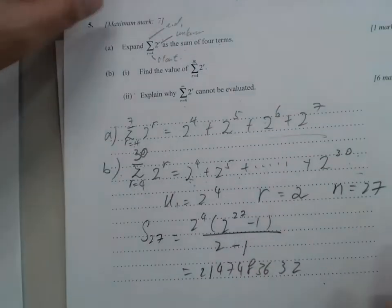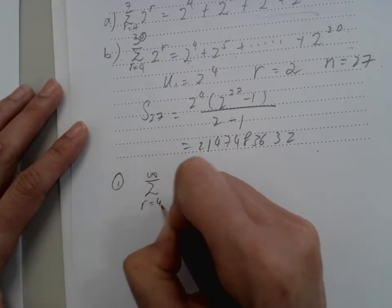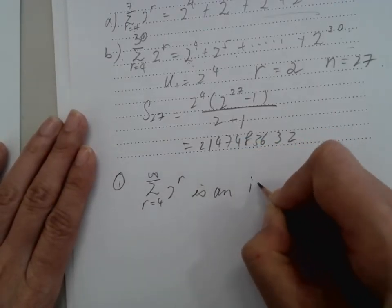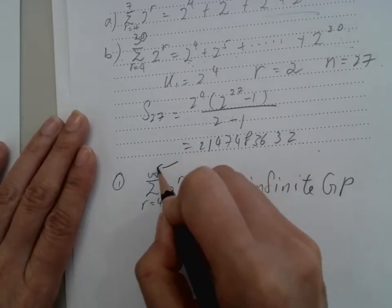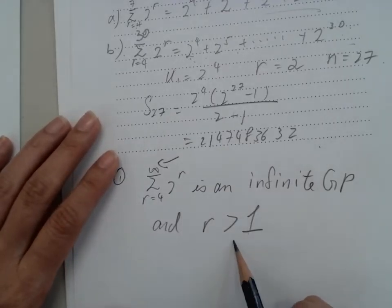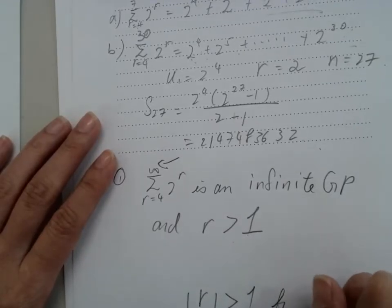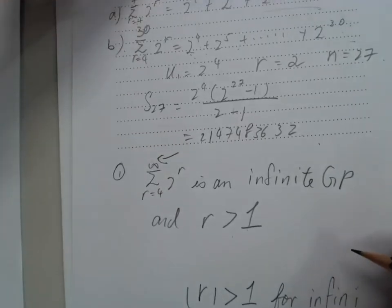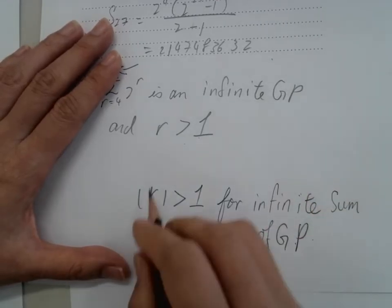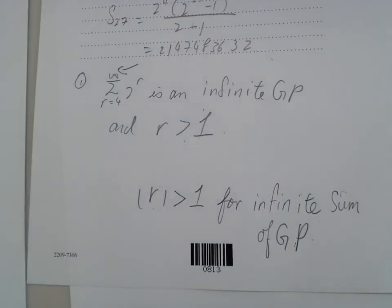All right, part b, explain why this could not be evaluated. First of all, this is an infinite GP. And r is bigger than 1. We can only have infinite GP when r is smaller than 1 for infinite sum. So this is bigger than 1, so this cannot be calculated for the infinite sum, because the numbers get bigger and bigger. And this is our question.